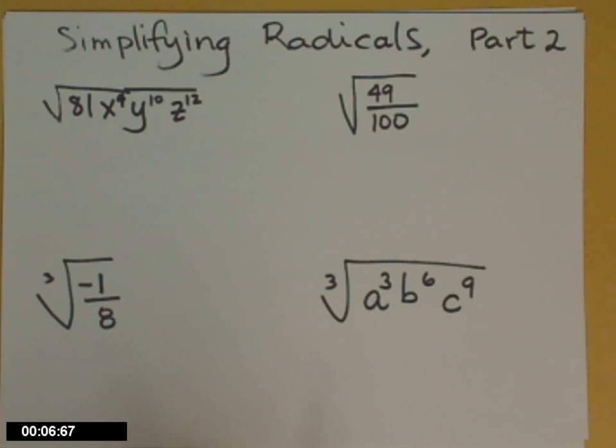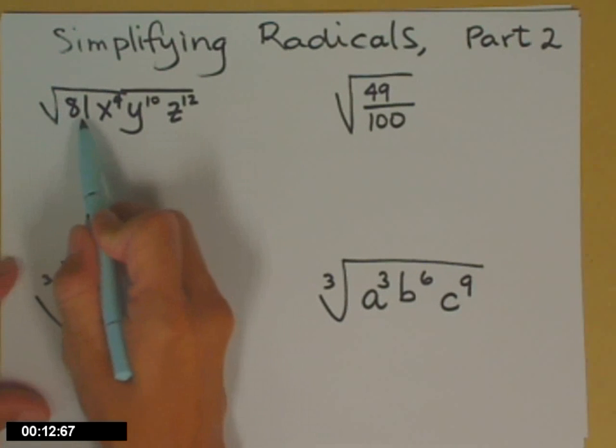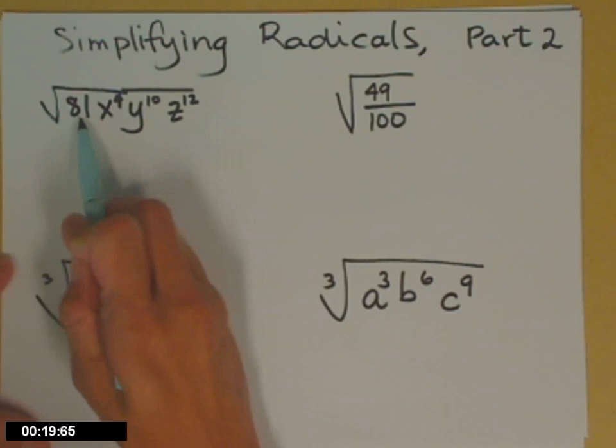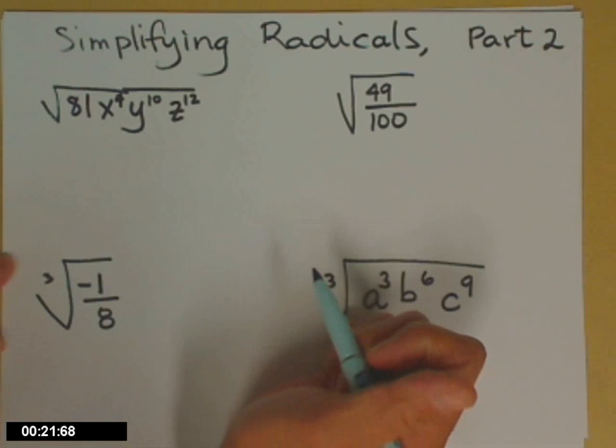So the first one, I have a square root of 81, x to the fourth, y to the tenth, z to the twelfth. My index is 2. Everybody underneath the radical is multiplying or dividing. I don't have any extra pluses or minuses in there. So I'm just going to go factor by factor and take the square root.